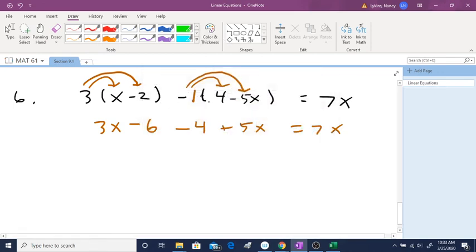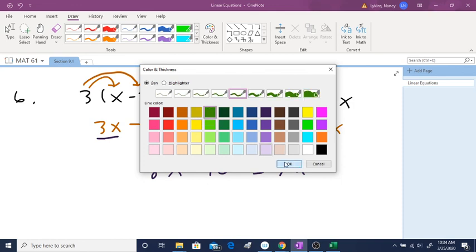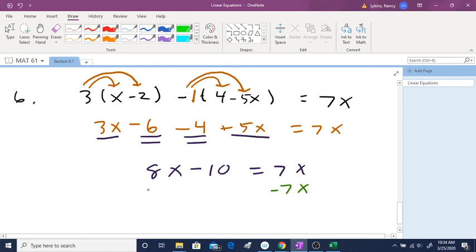The next step is combining like terms. I'm going to put one underline under the variable, in this case, the x, and I'm going to put two underlines under the numbers because I'm going to combine those. If I look at my 3x and my 5x, that gives me a total of 8x. My negative 6 and a negative 4, I think if you owe me 6 and owe me 4, you owe me minus 10 or a negative 10, equals 7x. Now I want to take my negative 7x, and I'm going to subtract it on both sides, subtract 7x, and that gives me x, but then I want to take this minus 10, I'm going to add 10 to both sides, so that gives me a positive 10. This is my answer.